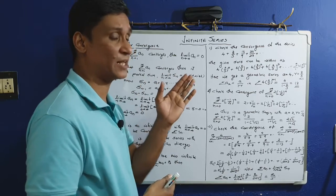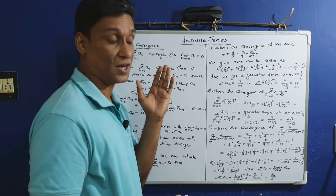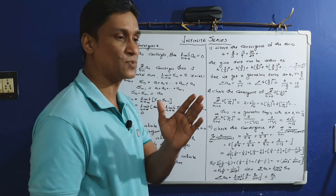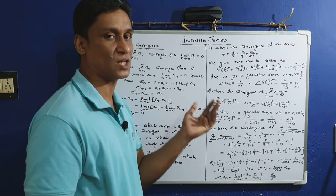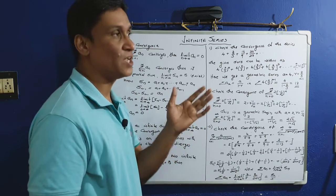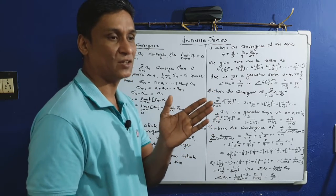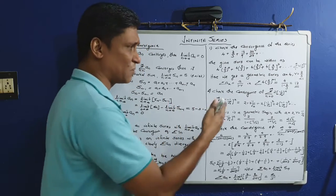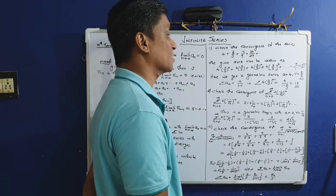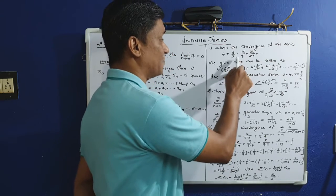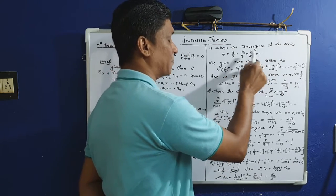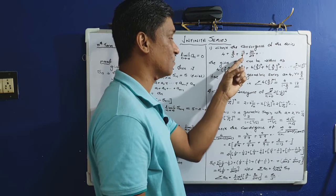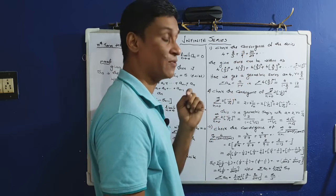Now, an example using the nth term observation. Problem 1: check the convergence of the series 4 + 8/3 + 16/9 + 32/27 + ... We observe the ratio between consecutive terms: 4, 8/3, 16/9, 32/27.